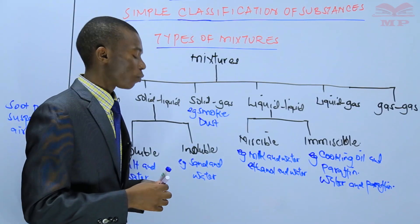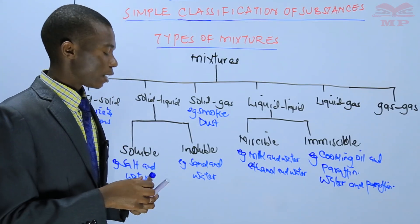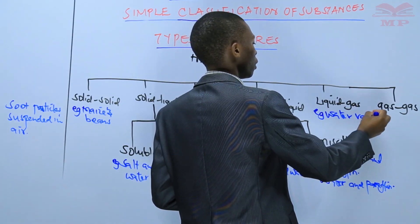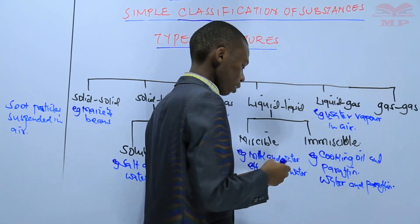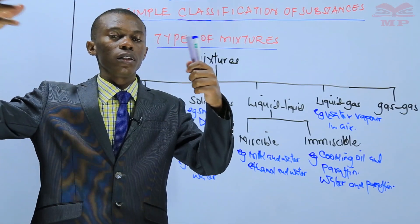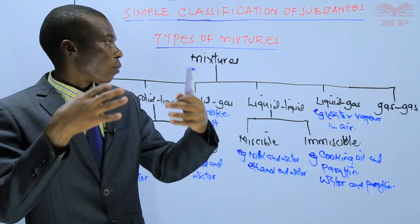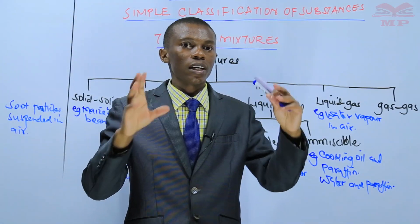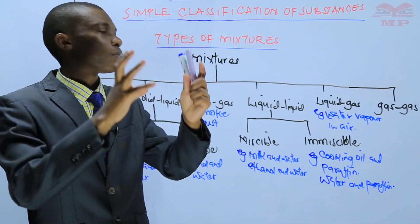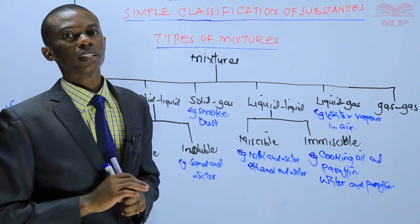For the liquid-gas mixture, an example is water vapor in air. Air is a mixture of gases — oxygen, nitrogen, carbon dioxide, and noble gases. When water vapor combines with air, that is a liquid-gas mixture, since water vapor is water in gas form.